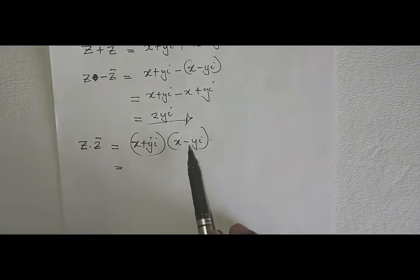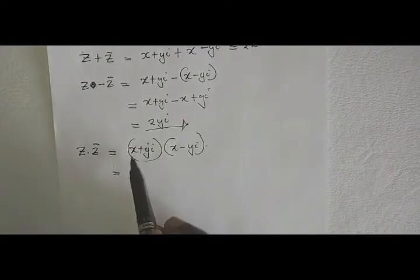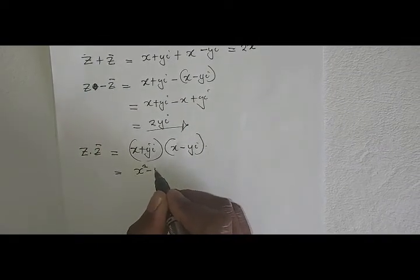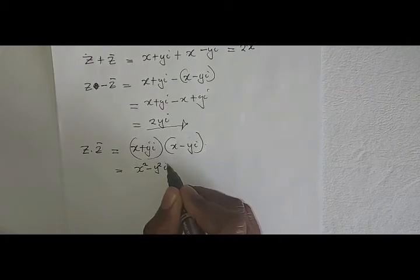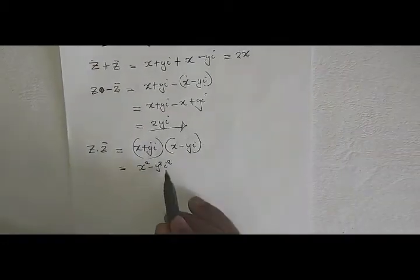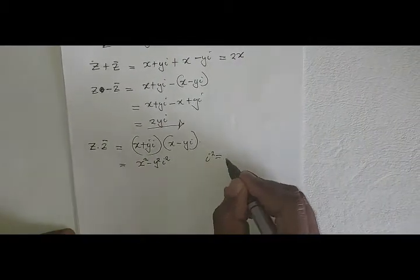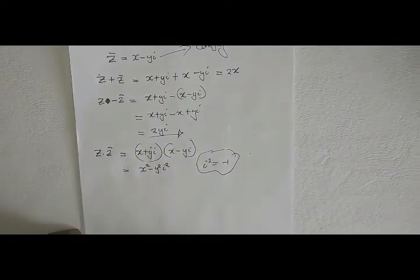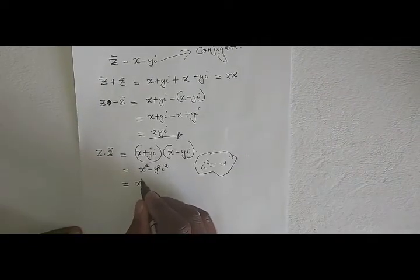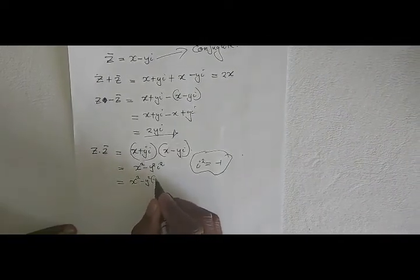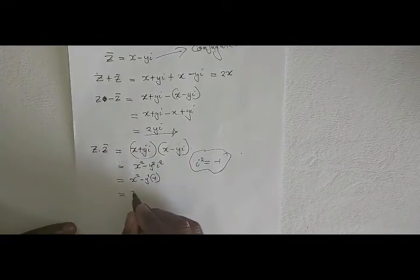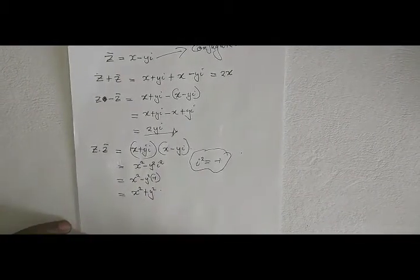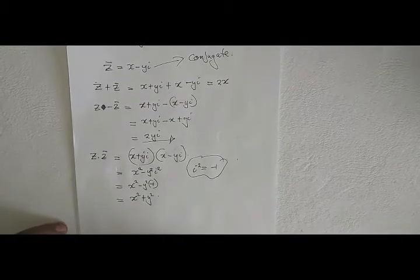This is like dealing with the difference of two squares. Expanding gives X squared minus Y squared times i squared. Since i squared equals minus 1, it becomes X squared minus Y squared times minus 1, which equals X squared plus Y squared. This is a very important result we must understand.